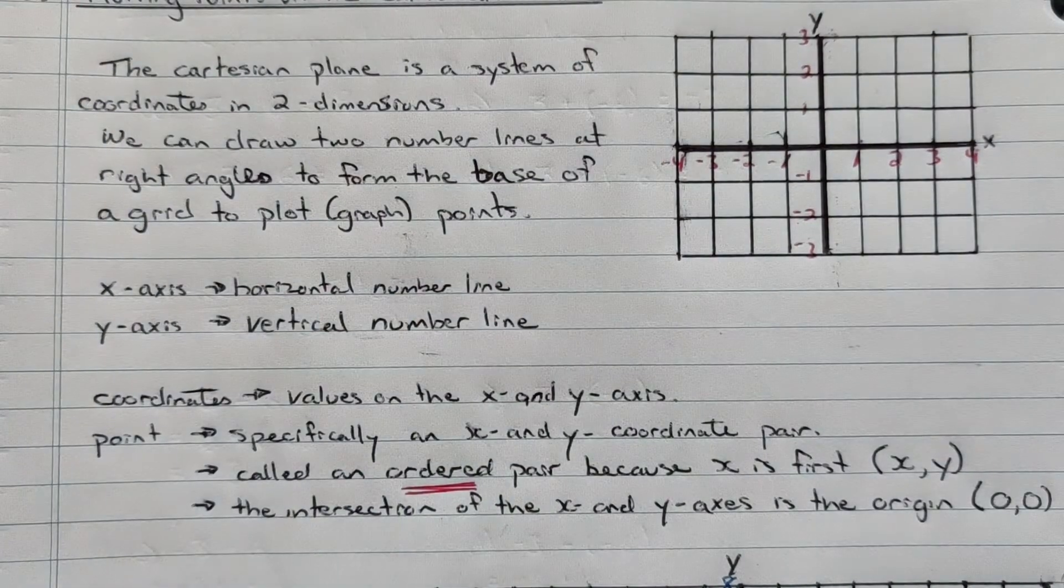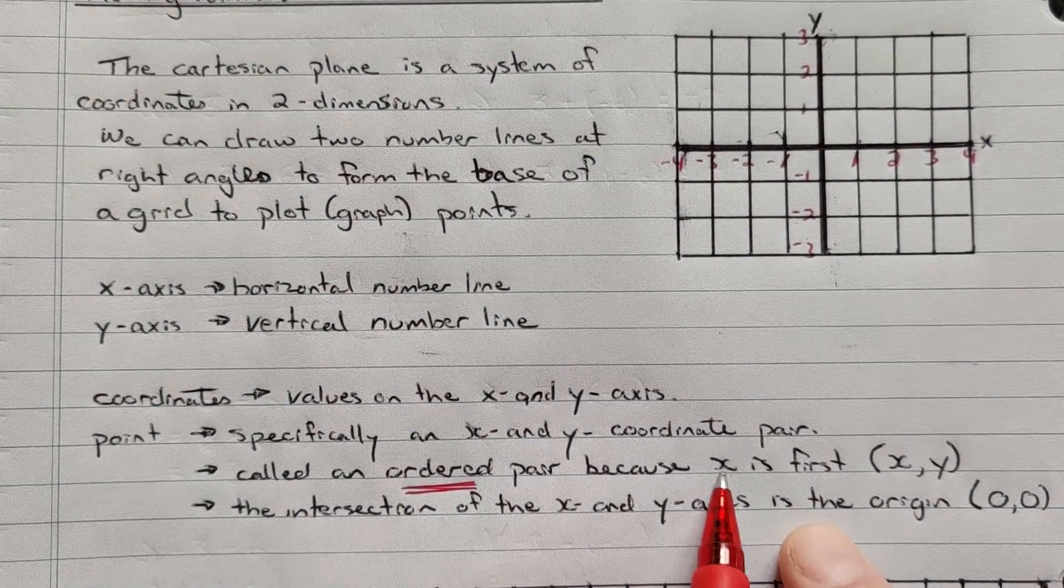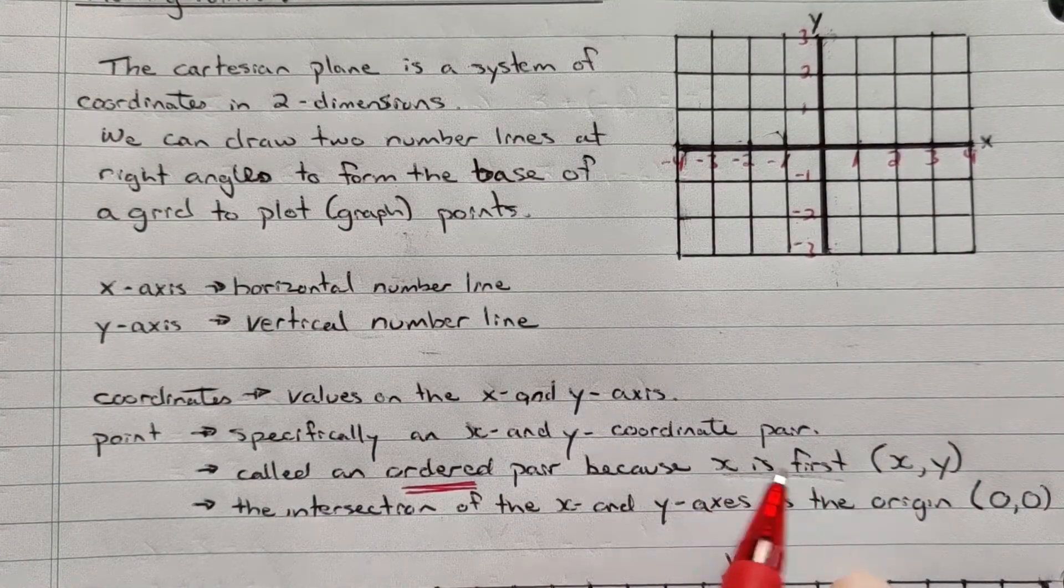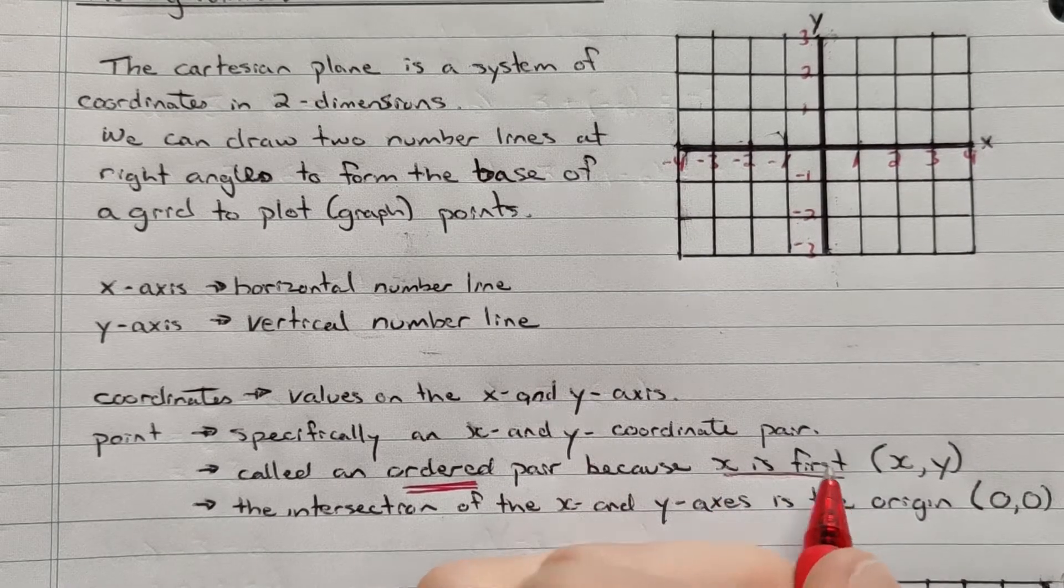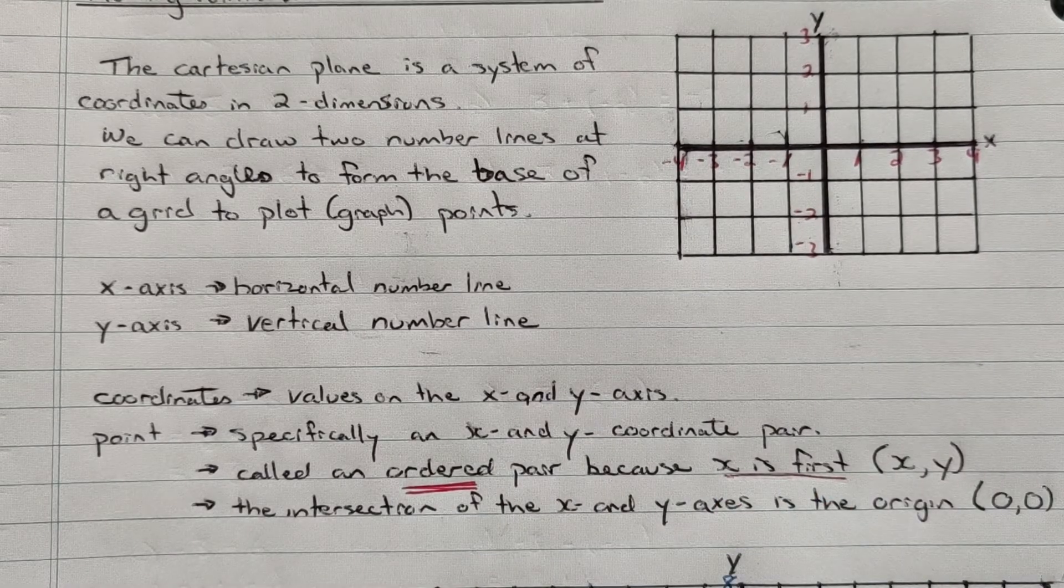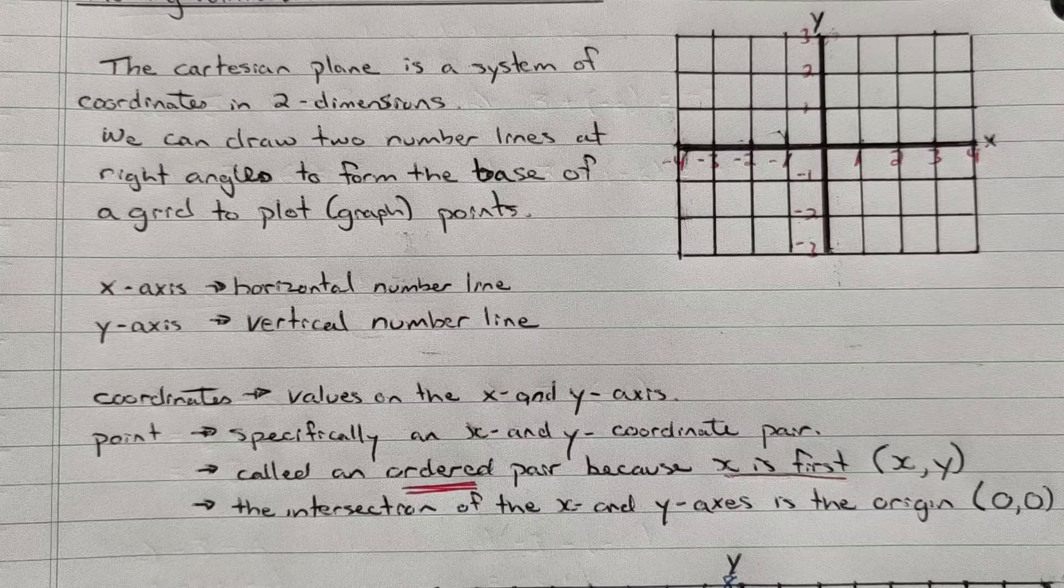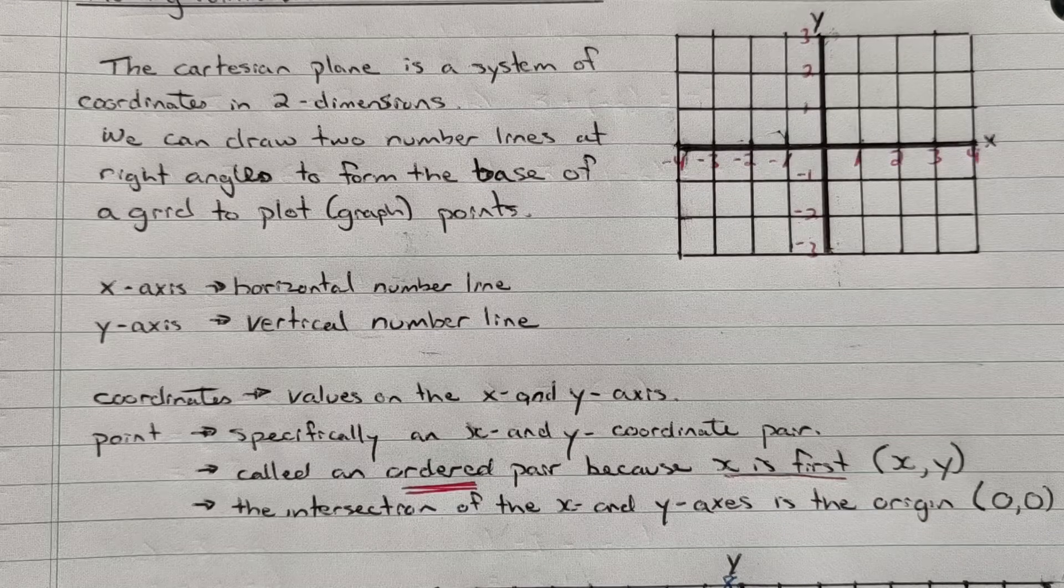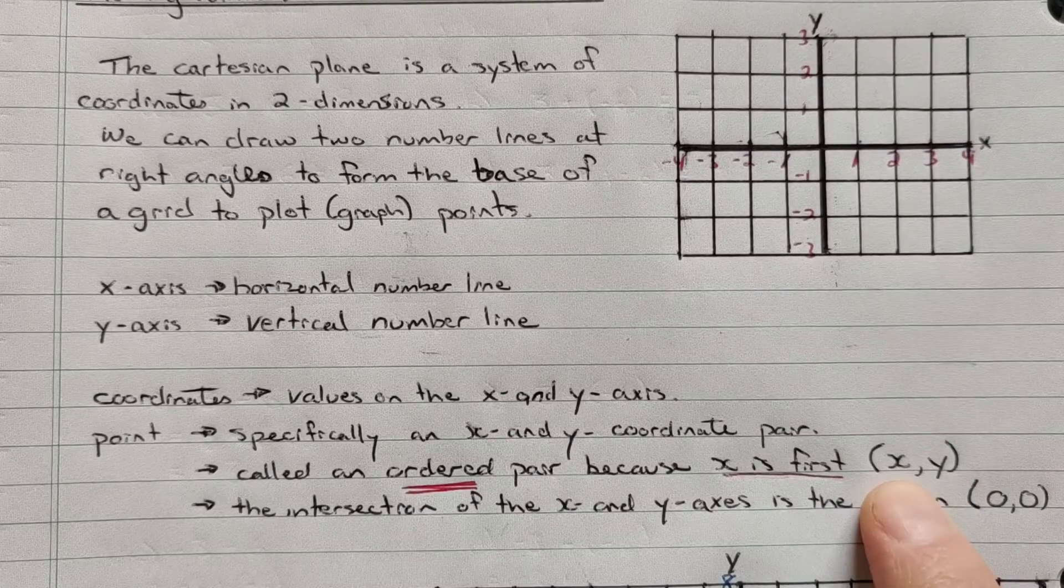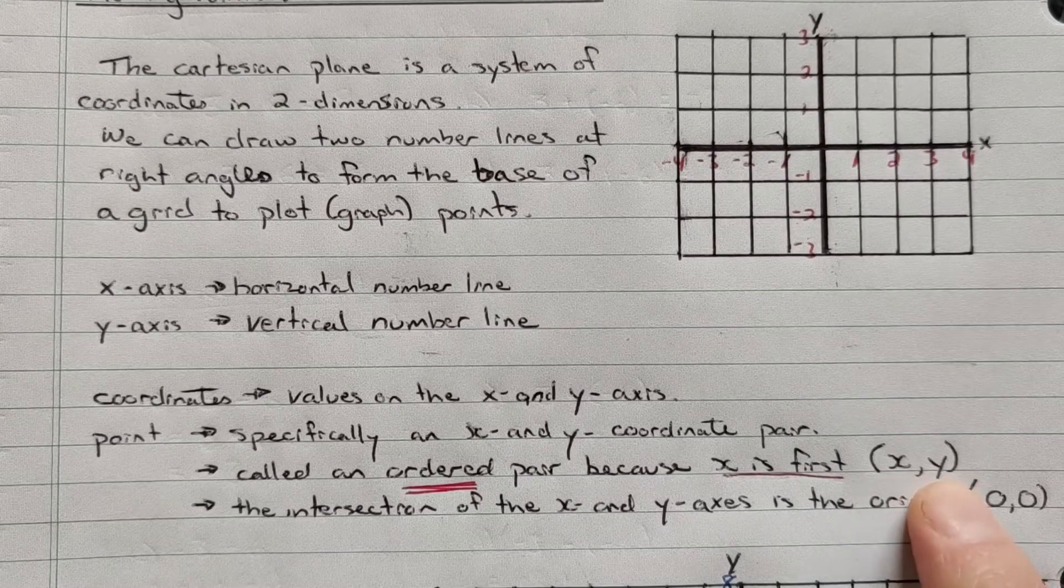It's an ordered pair because x is always first. Think of your alphabet. When you get down to it, it's x, y, z as your last three letters, x, then y. So the x coordinate comes first. The horizontal value comes first, then the vertical value.